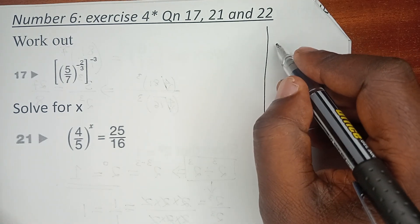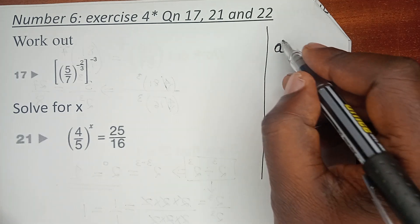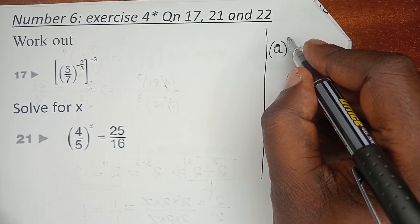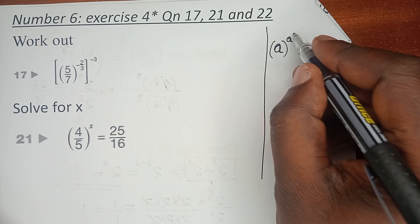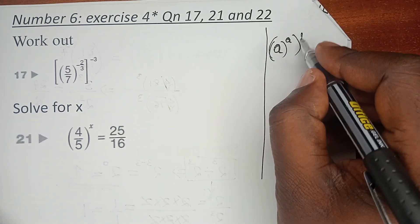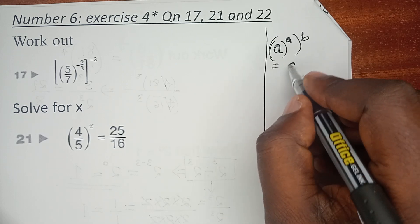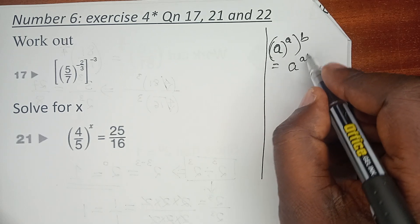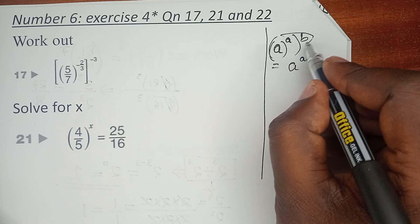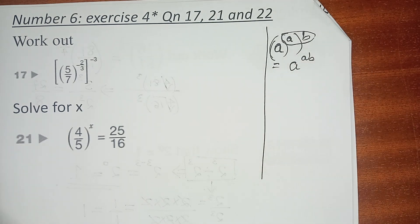For example, when A is raised to power A, and again it is raised to power B, then the whole of this becomes A raised to power AB, the product of those two indices.